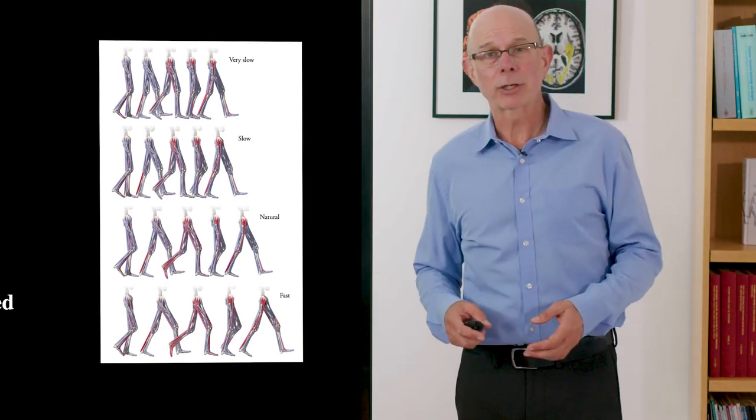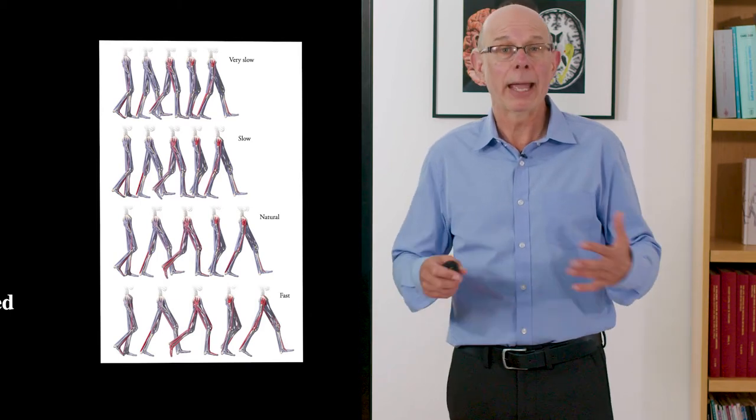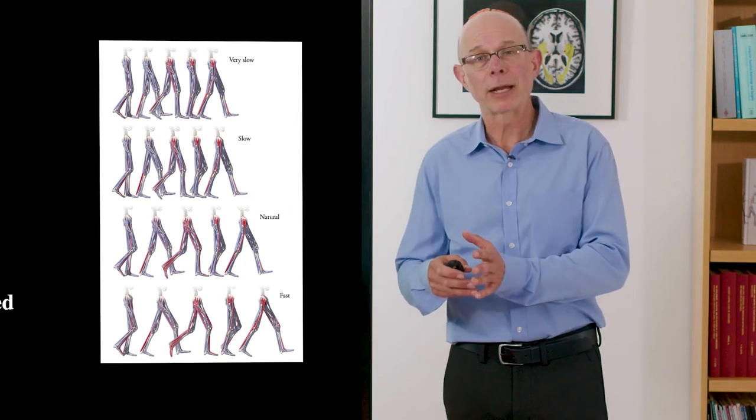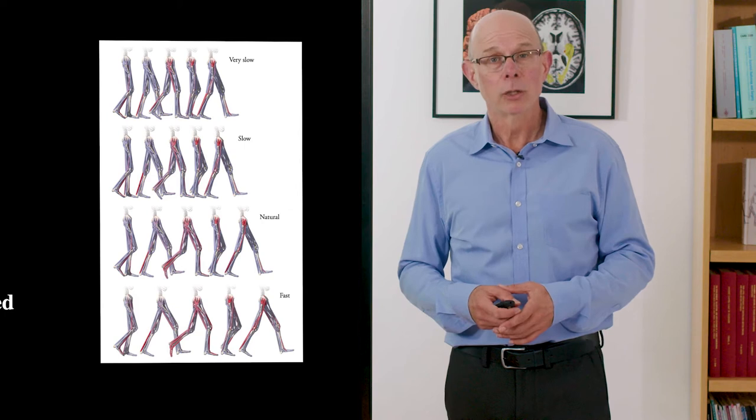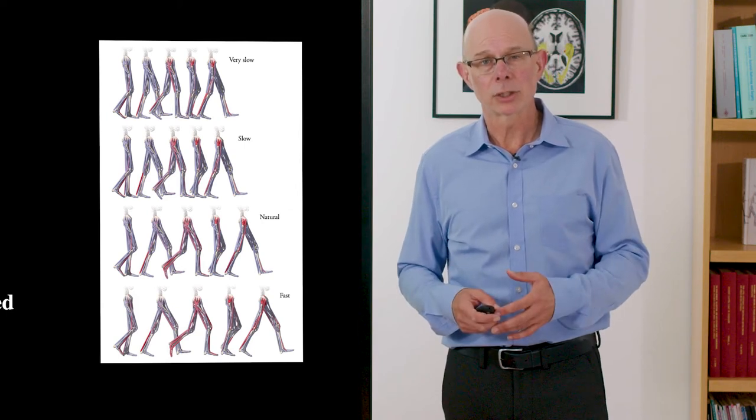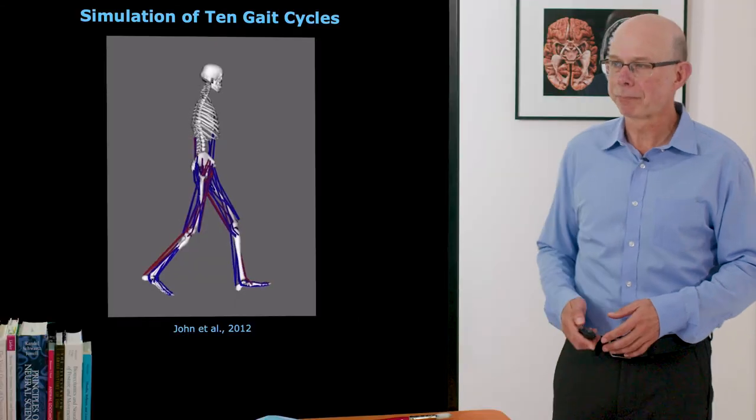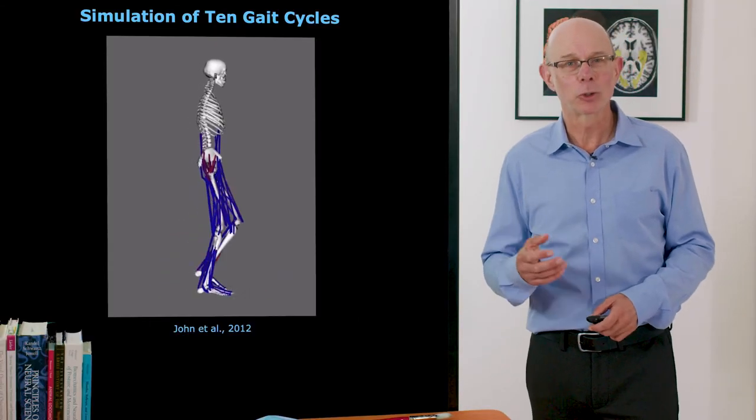We also analyze muscle actions in individuals who have physical disabilities or with age and they typically walk more slowly. We need to know whether the effects we're seeing are due to speed or due to some other impairment. So we need to understand actions not only during self-selected speed but at other speeds as well.